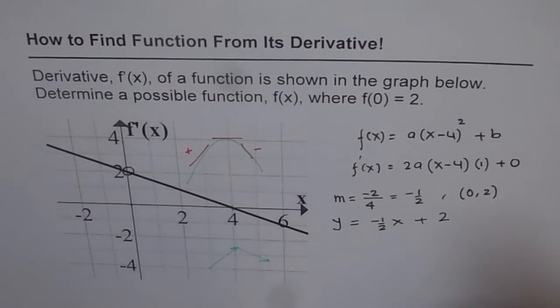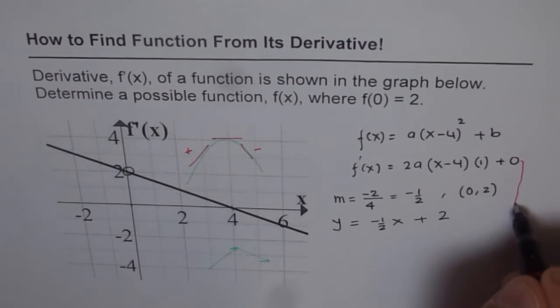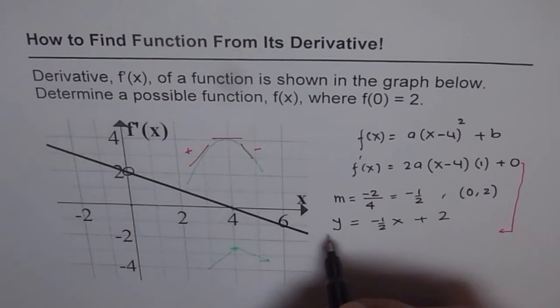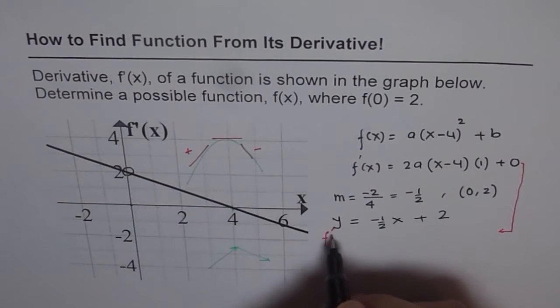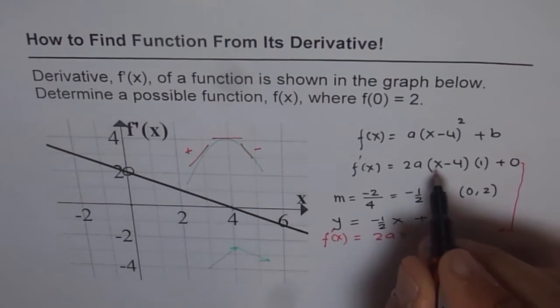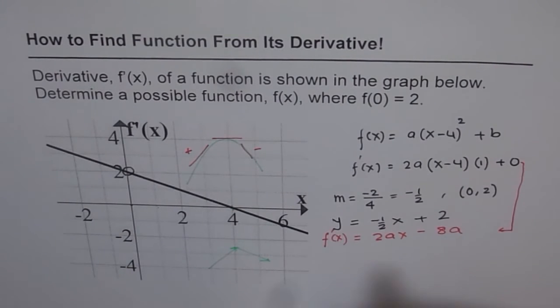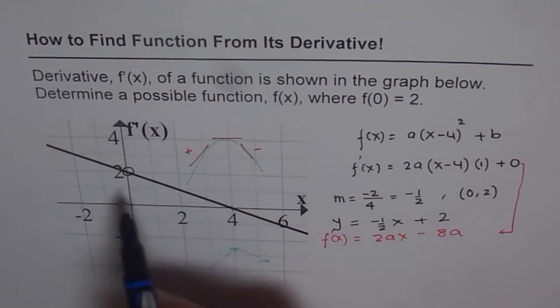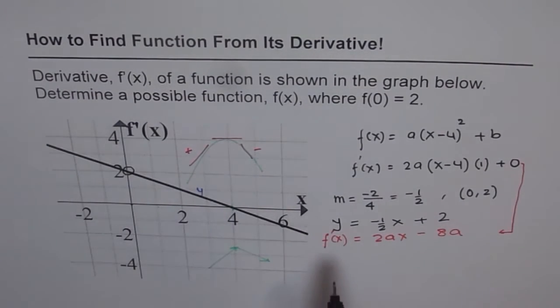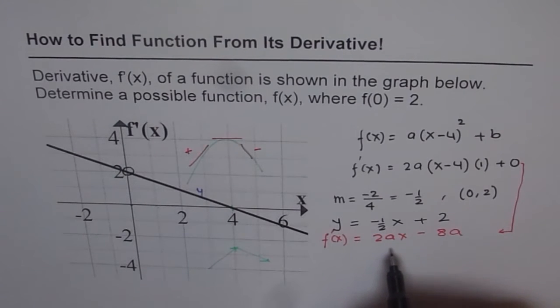So what we will do is rewrite this equation and then compare the coefficients. So when we rewrite, let me rewrite in a different ink and then we will compare them. So f'(x) is equals to, let me expand this part, which is 2ax minus 8a. So that is what we get. Now if you compare them, they have to be same. This is derivative. So this line which we are seeing, y is actually f'(x).